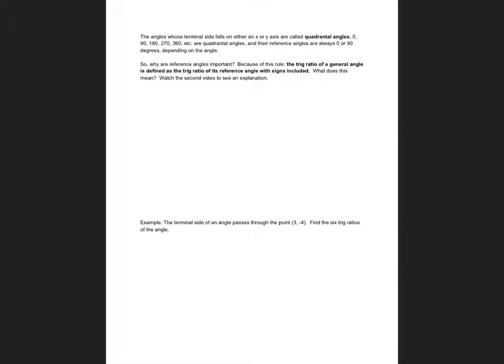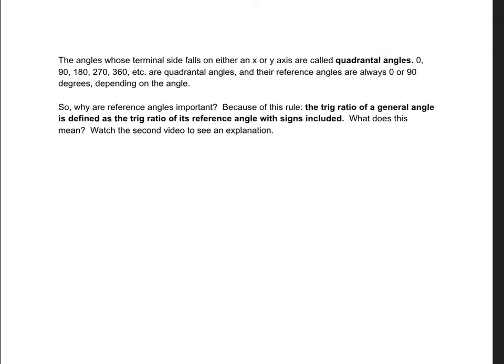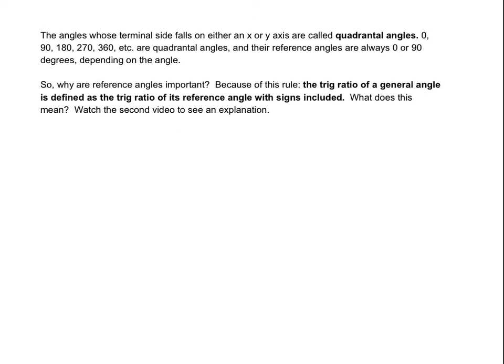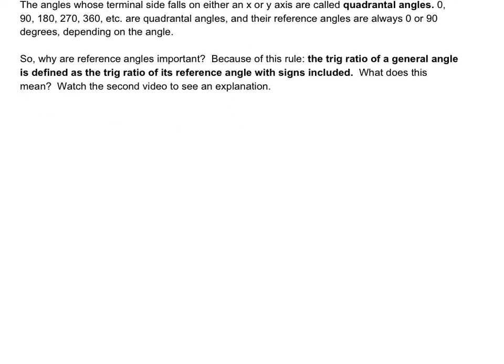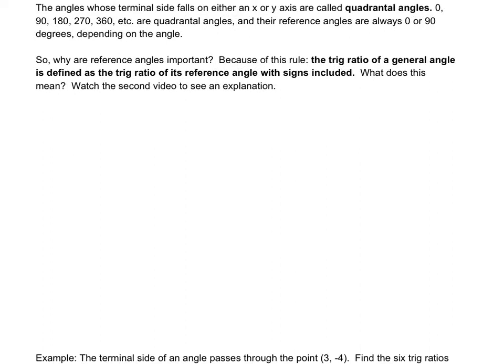Alright, so let's talk about how reference angles work in finding the trig ratio of a general angle. So this is the second page of your guided notes, so let's zoom in on the top there. So the rule is the trig ratio of a general angle is the trig ratio of the reference angle with signs included. So what does that even mean?